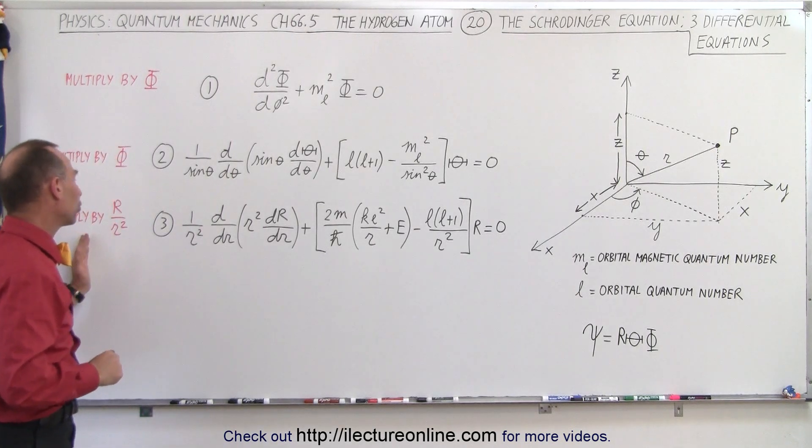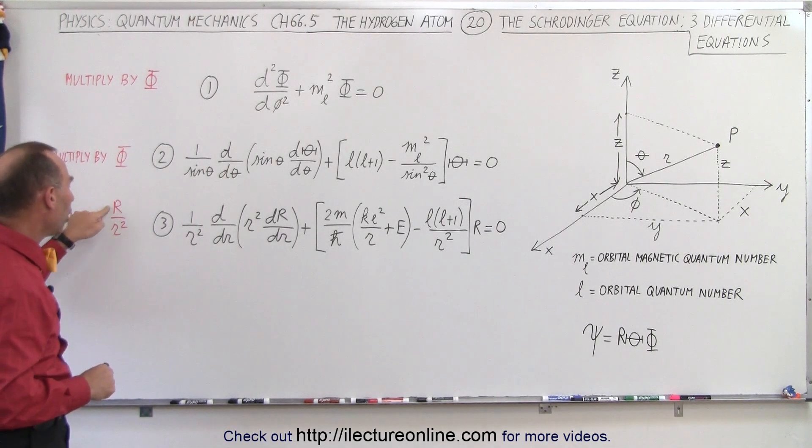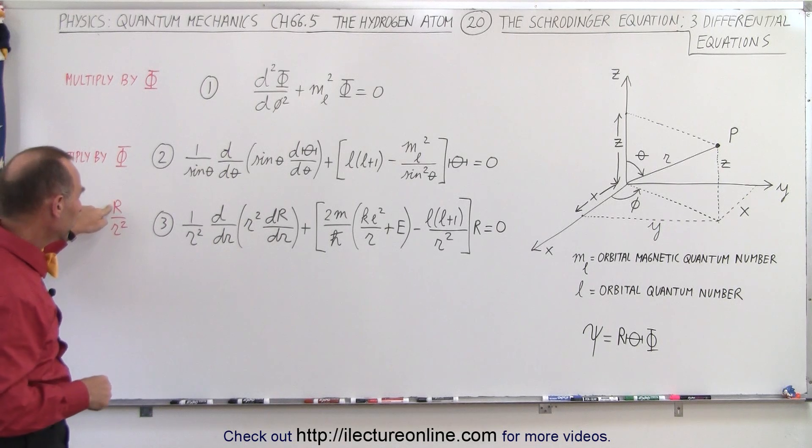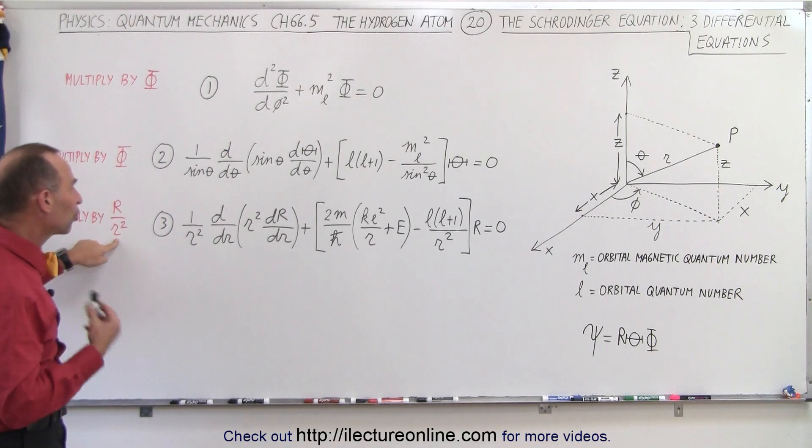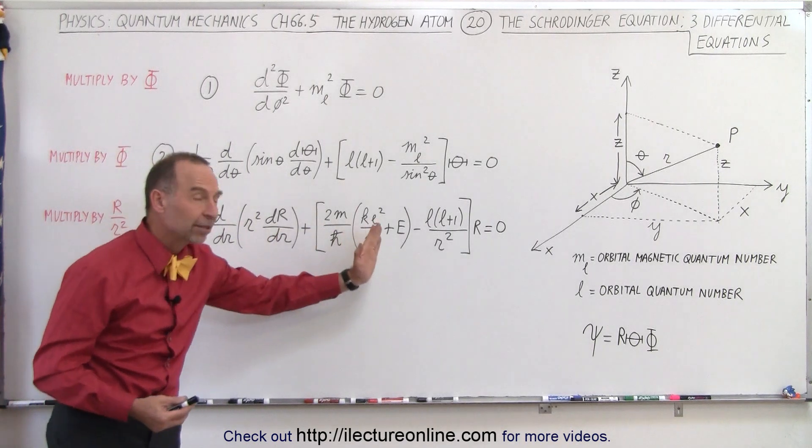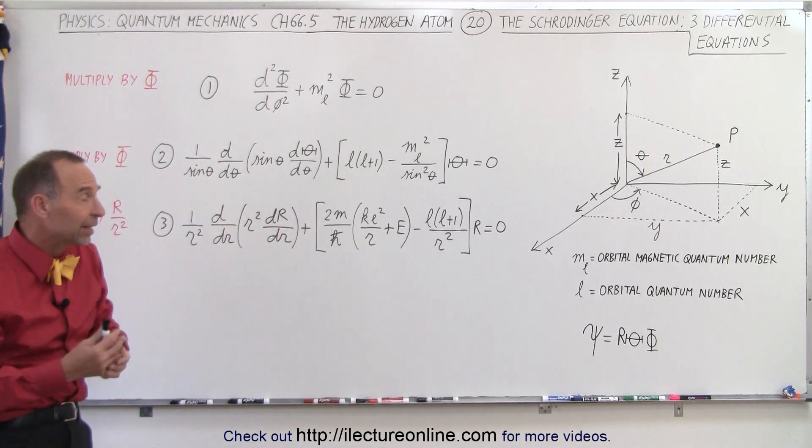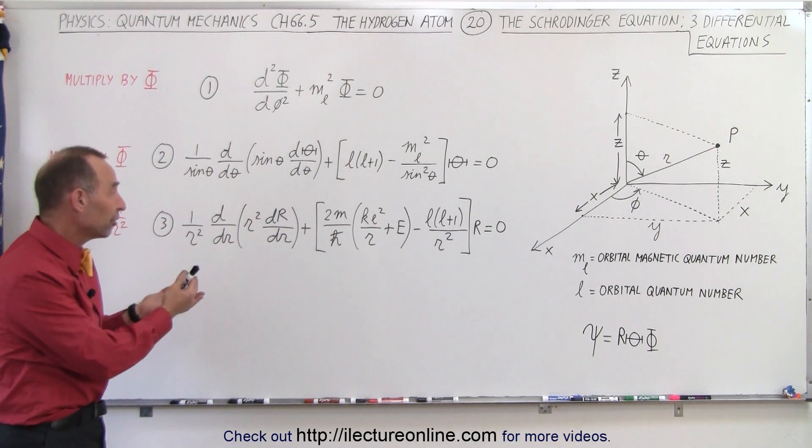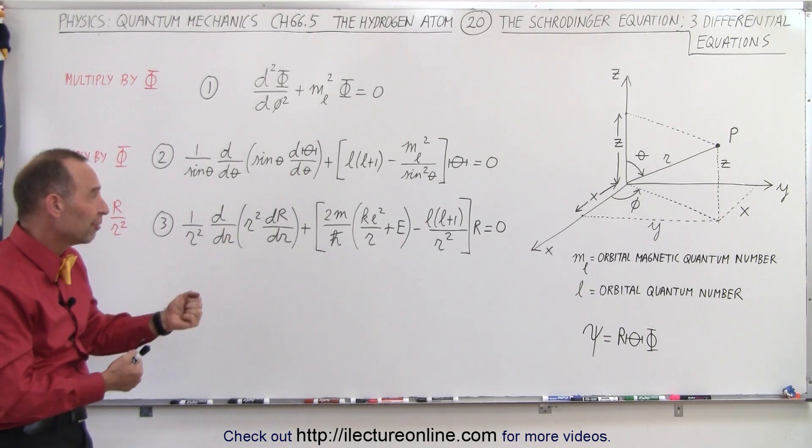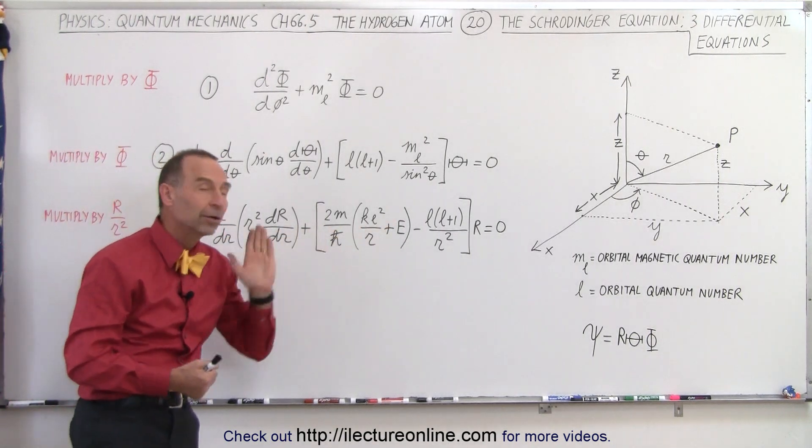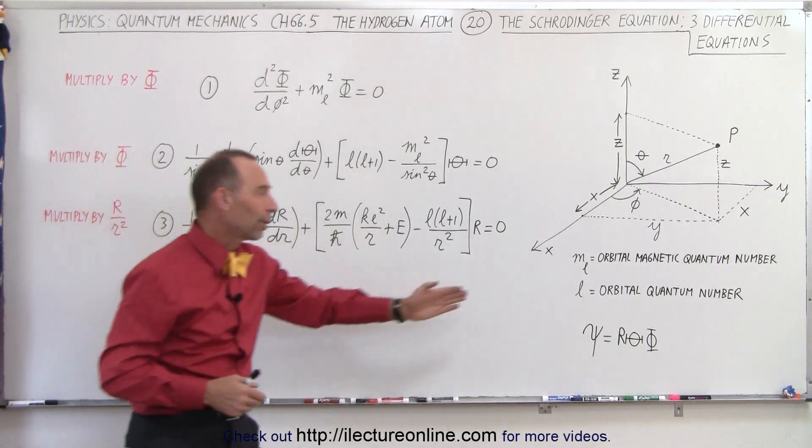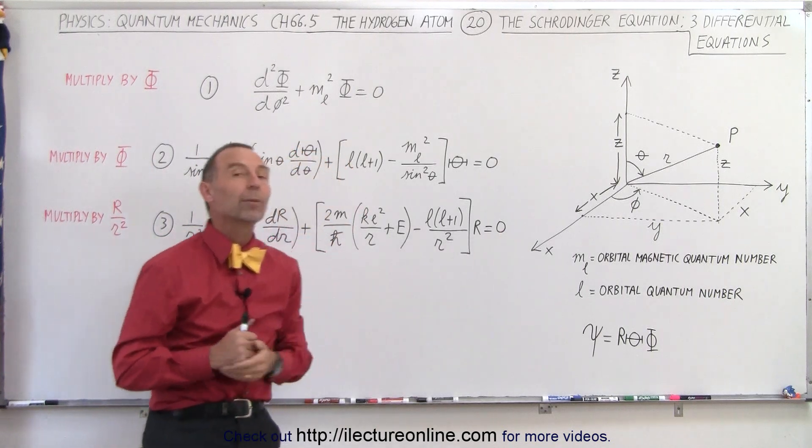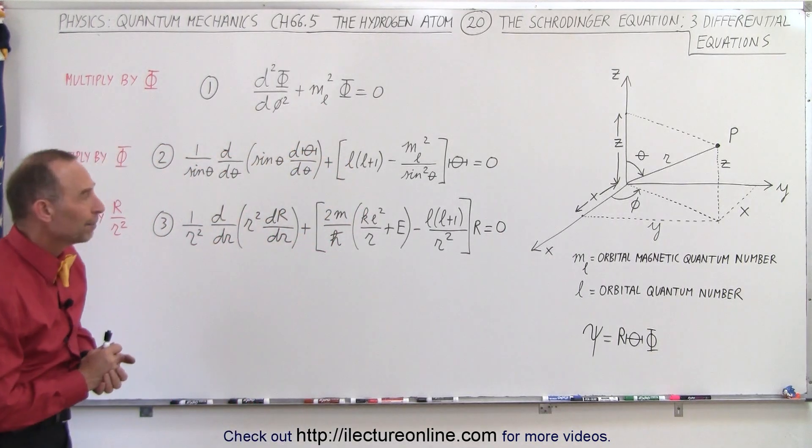And finally, the third differential equation, we're going to multiply that times r, which is the function r divided by the variable r squared. And if you do that, again, notice that we'll get the differential equation in the correct format for us to readily be able to solve it and also to be able to draw the information out of it that we need to right here in order to figure out the correct values for the quantum numbers of the electron in the hydrogen atom.